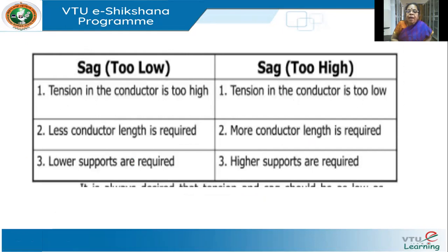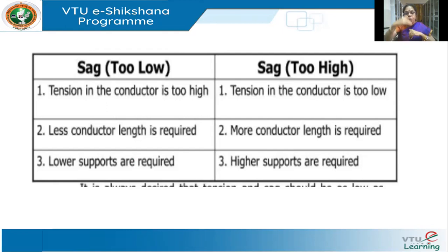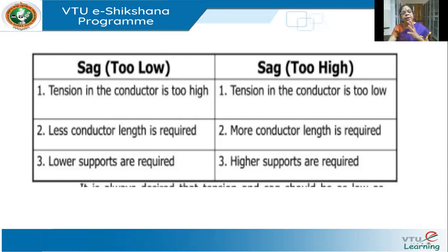If the sag is too low — very small, tightly stretched — tension will be very high, conductor length required is less, and you can have lower supports. However, if sag is too high, tension will be too small, you will require a lot of conductor length, and support height will have to increase because the conductor must not touch a building, tree, or a loaded lorry passing beneath. So the sag must be neither too high nor too low.